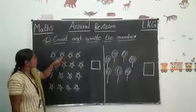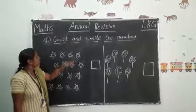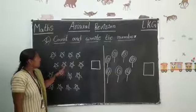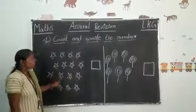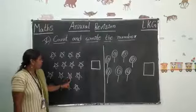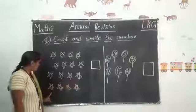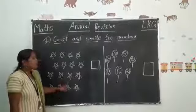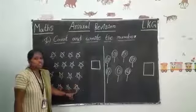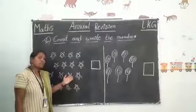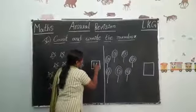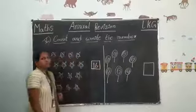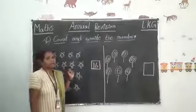One, two, three, four, five, six, seven, eight, nine, ten, eleven, twelve, thirteen, fourteen, fifteen, sixteen. How many stars are there? Sixteen. So write here? One, six, sixteen. Sixteen stars are there.